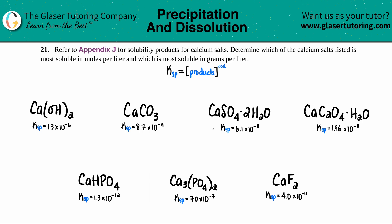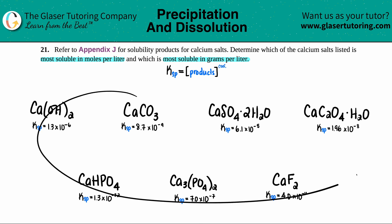Number 21: Refer to Appendix J for solubility products for calcium salts. Determine which of the calcium salts listed is the most soluble in moles per liter and which is the most soluble in grams per liter. This one's going to be a crazy one — there's a lot to do here, so let's get down to business. I went to Appendix J of this textbook and it turns out there are seven calcium salts.